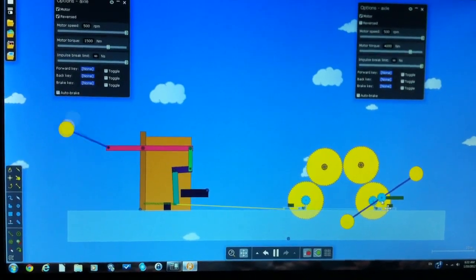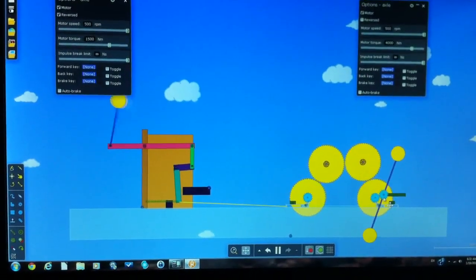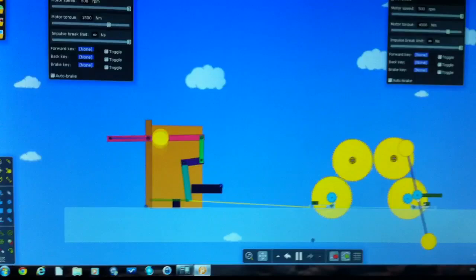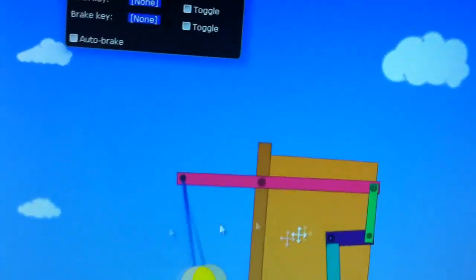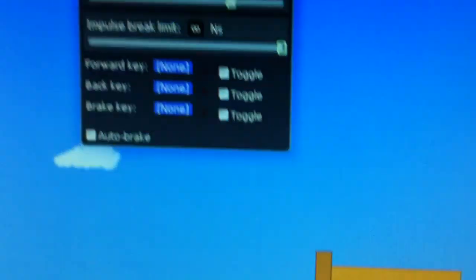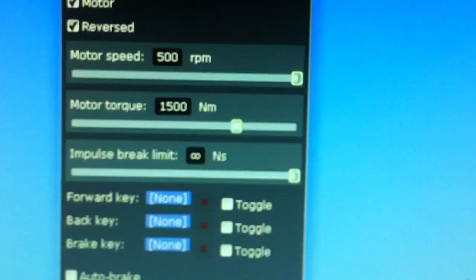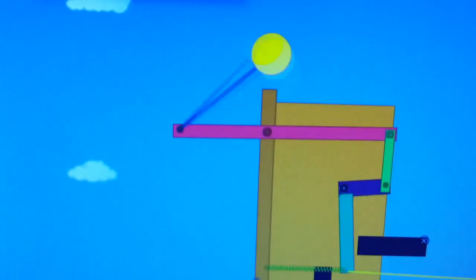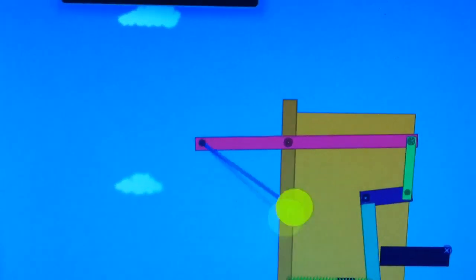Okay, fellow YouTubers, this is Magnamotor demonstrating over unity. On this motor here, we have 1,500 Newton meters of torque swinging a pendulum.